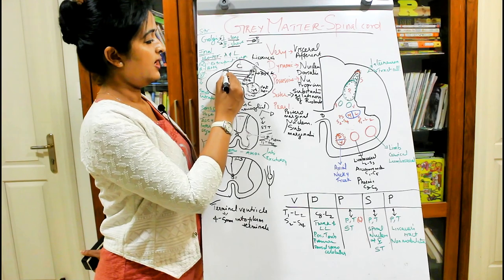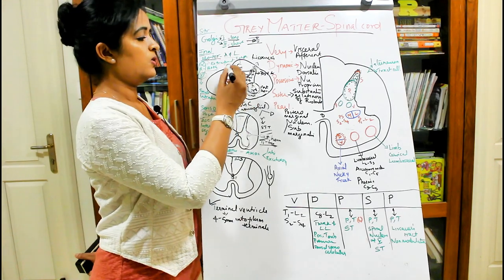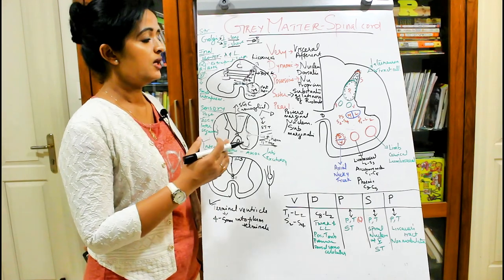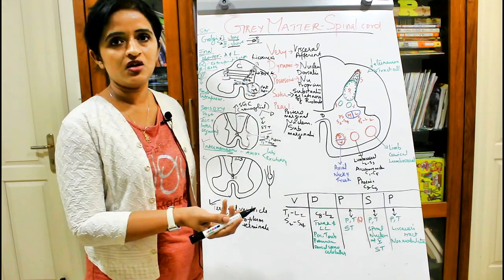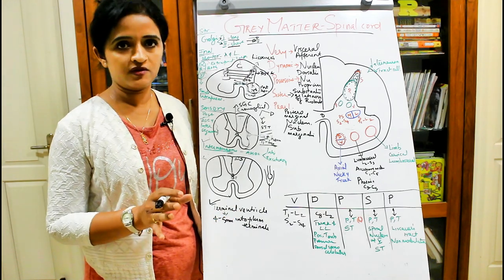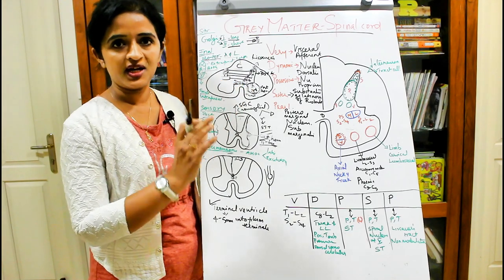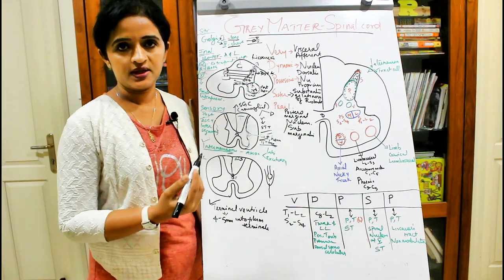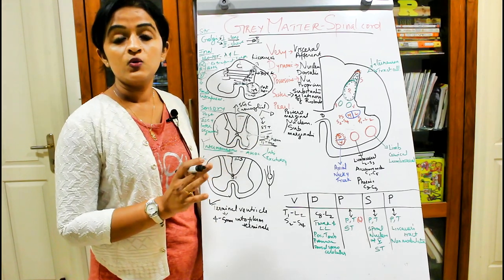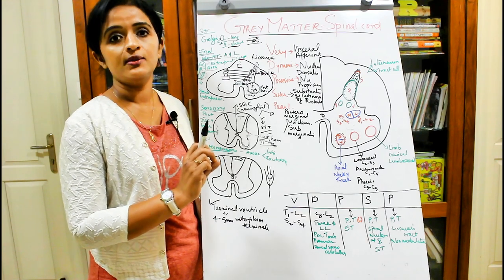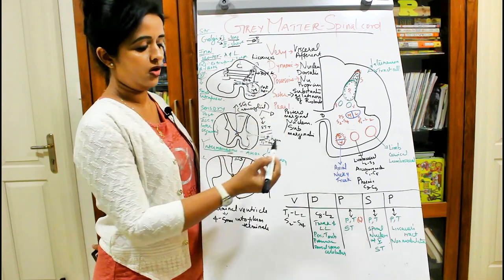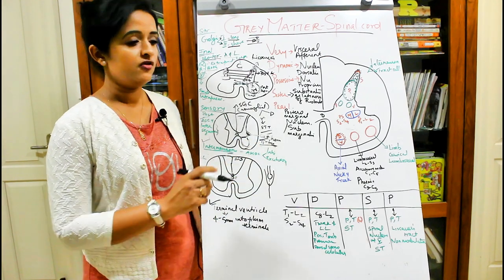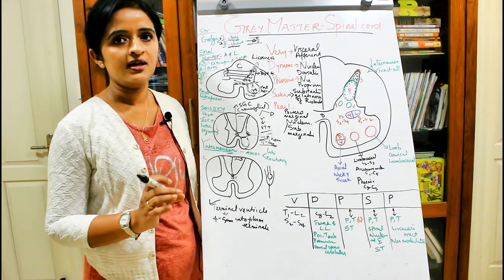These subdivisions are mentioned because some books refer to structures by their location within the horn — such as 'at the base of the posterior horn' or 'toward the head of the anterior horn.' You should not be confused by such terminology. The lateral horn emerges from the base of the anterior horn, so knowing these subdivisions helps you precisely locate structures.